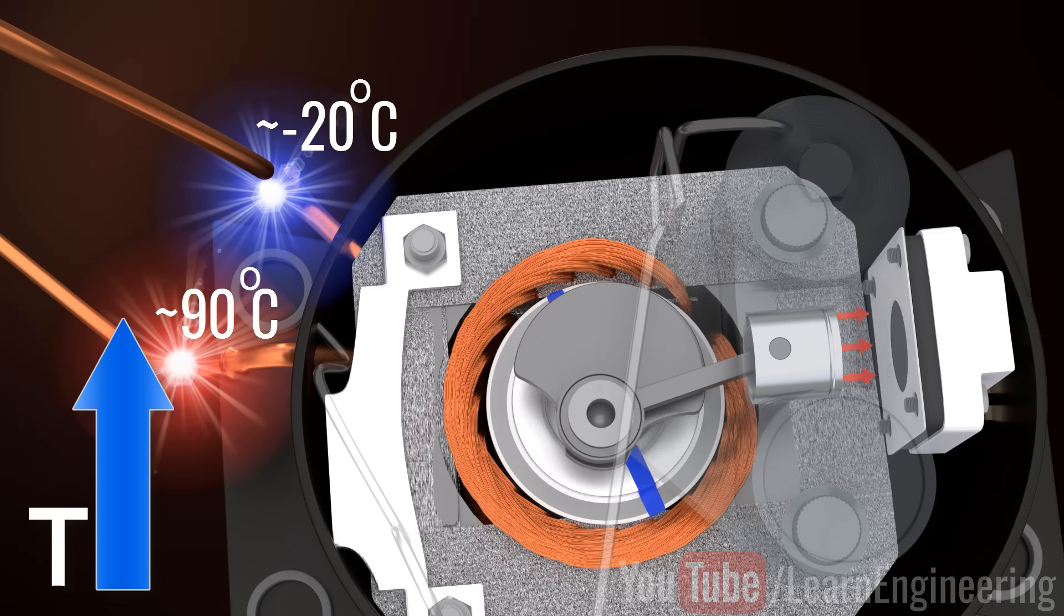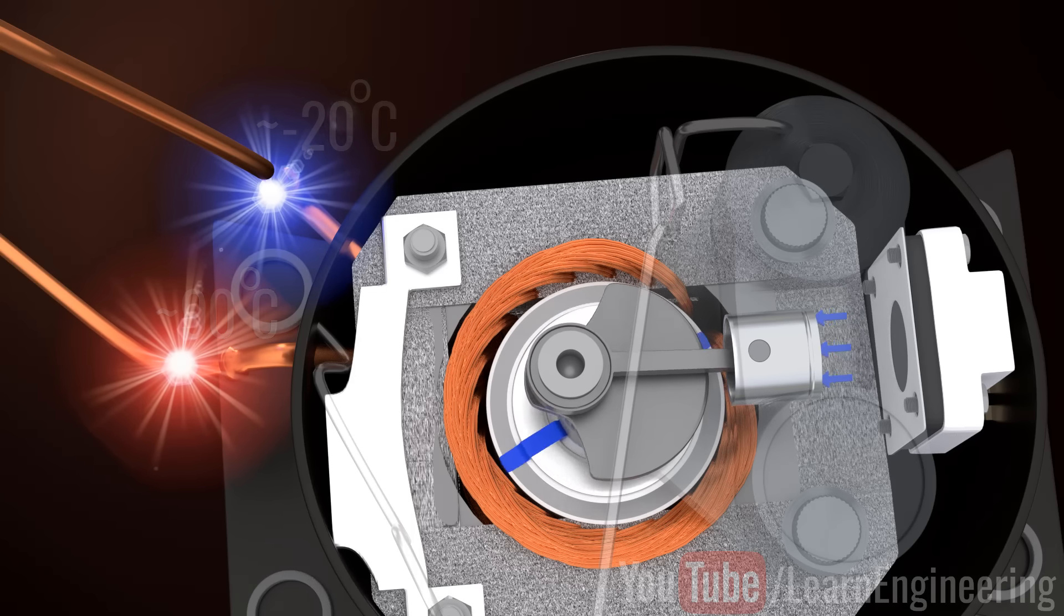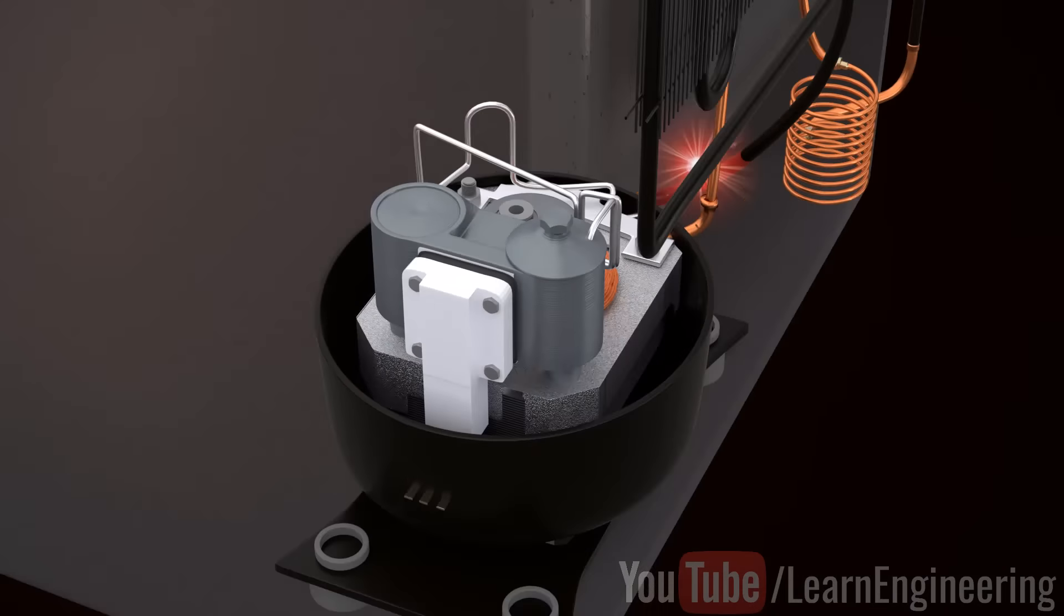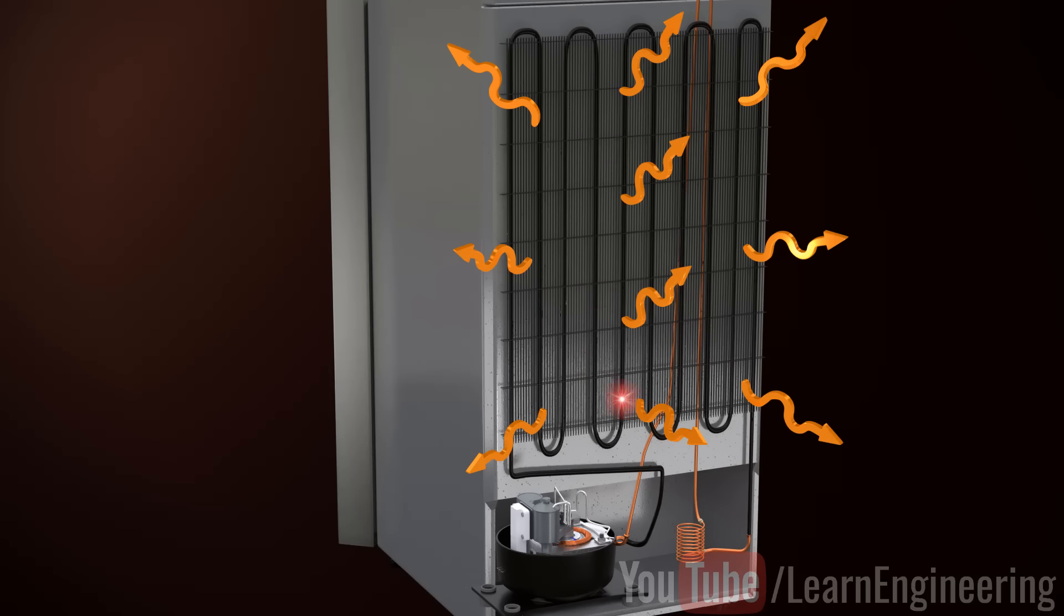Now, the refrigerant is high pressure vapor. To convert it to a liquid stage, we introduce another heat exchanger. This heat exchanger is fitted outside of the refrigerator. Thus, it will liberate heat to its surroundings. Vapor will be converted to liquid, and temperature will reach a normal level. This heat exchanger is known as a condenser.